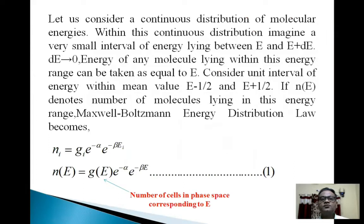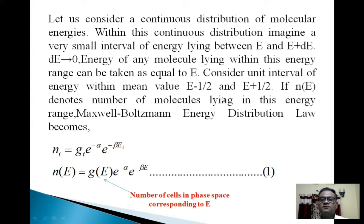Now let us consider a continuous distribution of molecular energies. Within this continuous distribution, imagine a very small interval of energy lying between E and E plus dE, where dE tends to 0. Energy of any molecule lying within this energy range can be taken equal to E. Now consider a unit interval of energy between E minus 1/2 and E plus 1/2. If N_E is the number of molecules lying in this range, you know Maxwell Boltzmann Energy Distribution Law: N_i = G_i * e^(−α) * e^(−βE). So N_E = G_E * e^(−α) * e^(−βE), where G_E is number of cells in phase space corresponding to energy E. (Equation 1)